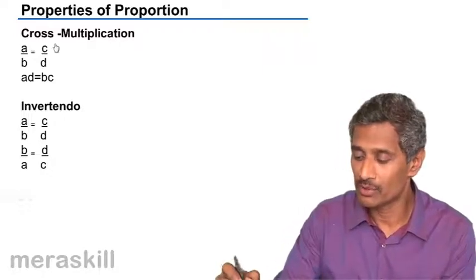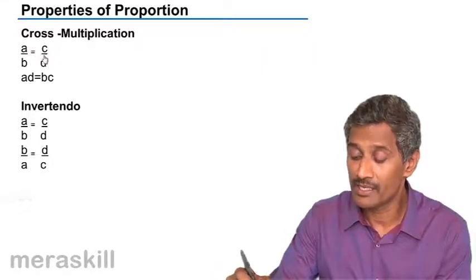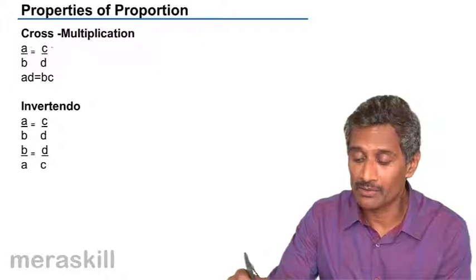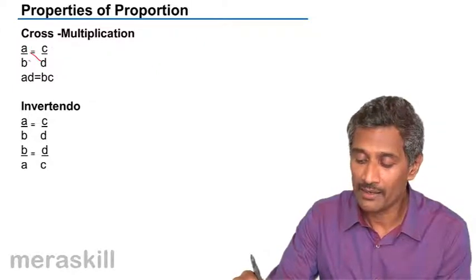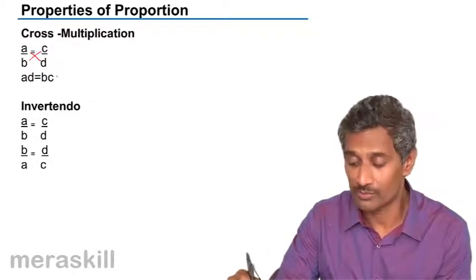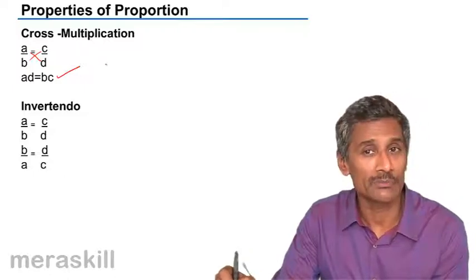So, as I told earlier, a recap of what we did. We have A/B equals C/D. Cross multiply and you get AD equals BC. This is called the cross multiplication property.